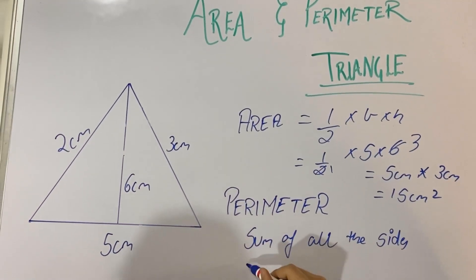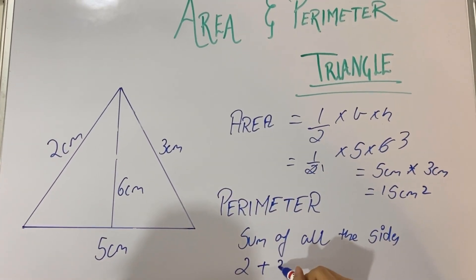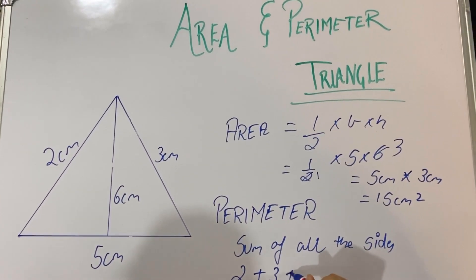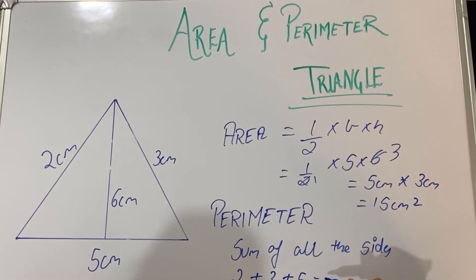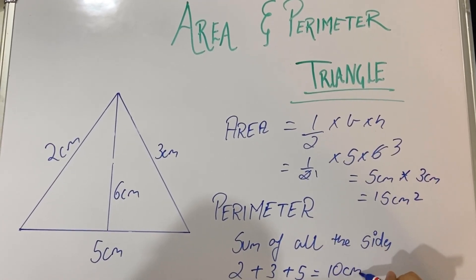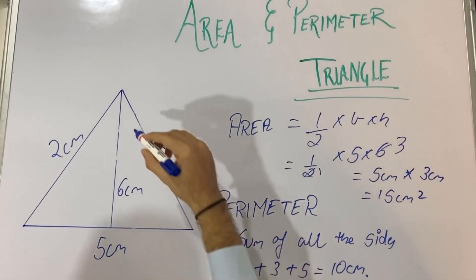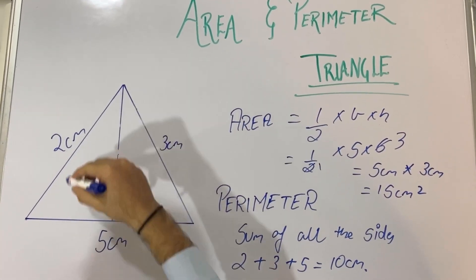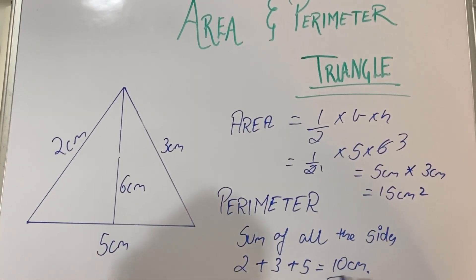The perimeter is the sum of all the sides, that is 2 plus 3 plus 5, which is equal to 10 centimeter. Please note that 6 is the height — it is not included in the perimeter.